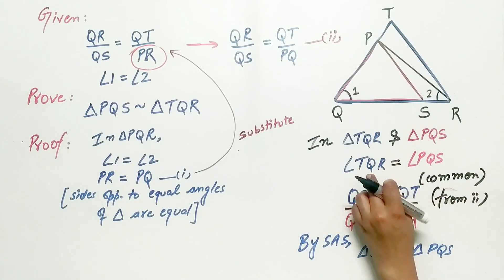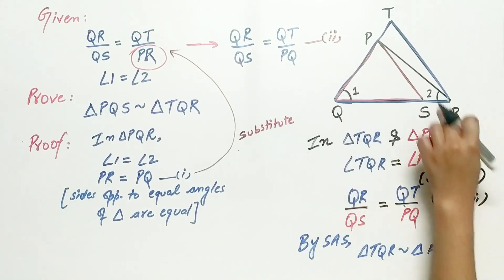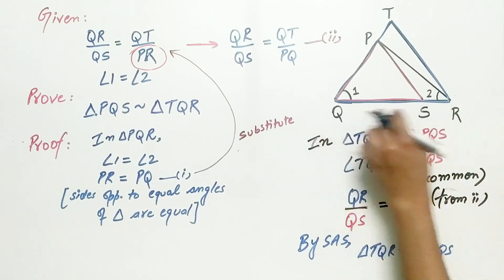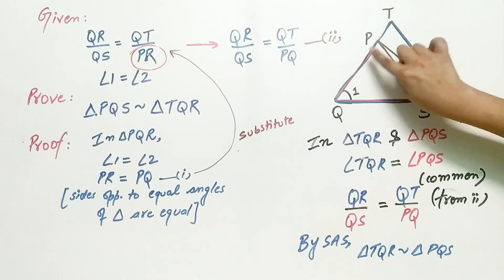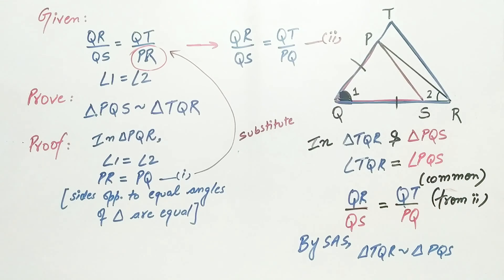Now look, angle TQR and angle PQS, they are common, they are in both the triangles. Now, QR by QS is equal to QT by PQ. Hence, by SAS, both the triangles are similar.